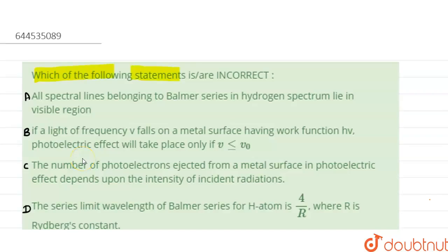following statements is or are incorrect? Let us analyze each statement. The first statement is: all the spectral lines belonging to the Balmer series in hydrogen spectrum lie in the visible region. This statement is correct because